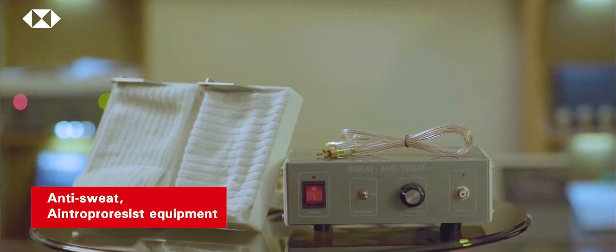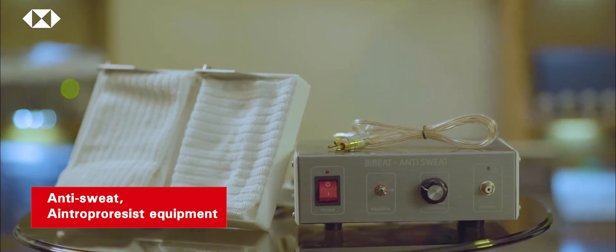The second category is wellness products for people, like a device called Anti-Sweat. It's an iontophoresis equipment for treating excessive sweating of palms and soles.